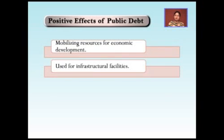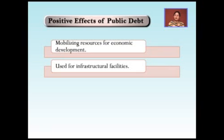Public debt can also be used for infrastructure facilities — both economic infrastructure such as economic overheads, and social infrastructure such as social overheads. The borrowed money can be utilized for construction of roads, power projects, schools, health centers, and various marketing areas for agriculture and industry.